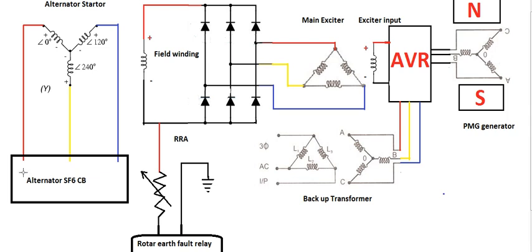We can use the XSXXX protection. Then we use the rotor and earth protection. There is a resistance — when we look at the resistance, there are two types: one current-based and one voltage-based relay. We use the current-based relay.